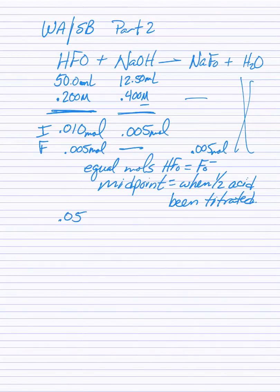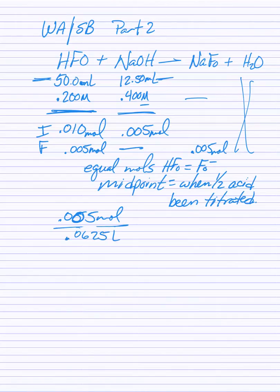Now if that's the case, if I take that 0.005 moles of either one of these, this is going to be, I had 50 mils and 12.5 mils so 0.0625 liters. And what that's going to give me is 0.080 molar of both of these.